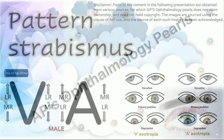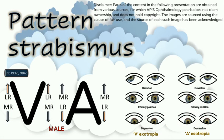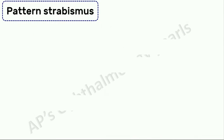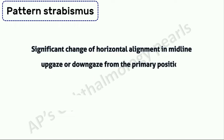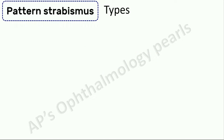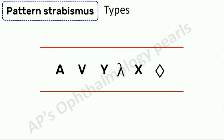Hello viewers, welcome to AP's Ophthalmology Pearls. Today we shall discuss pattern strabismus. What is pattern strabismus? It is a significant change of horizontal alignment in midline, upgaze or downgaze from the strabismus. We can understand this better by studying the various types along with examples.